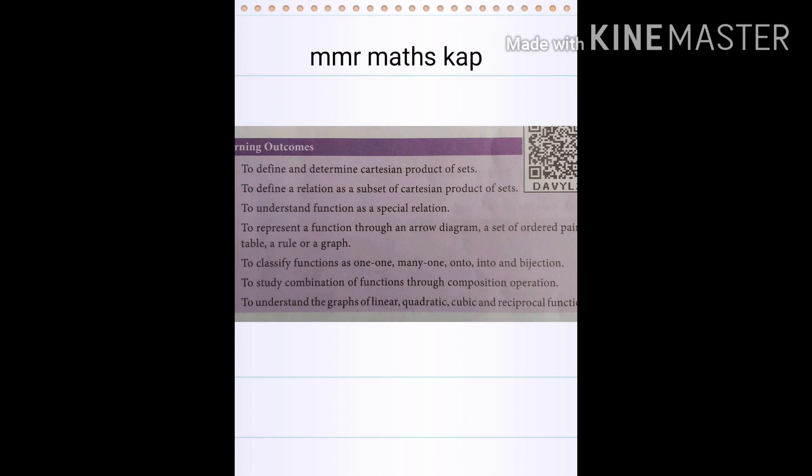In this chapter, we will learn to define and determine the Cartesian product of sets; define a relation as a subset of the Cartesian product of sets; understand function as a special relation; represent a function through an arrow diagram, set of ordered pairs, a table, a rule, or a graph; classify functions as one-one, many-one, onto, into, and bijection functions; study combinations of functions through composition; and understand graphs of linear, quadratic, cubic, and reciprocal functions.